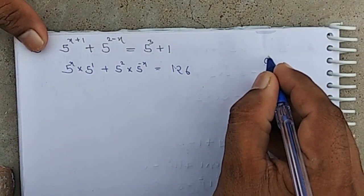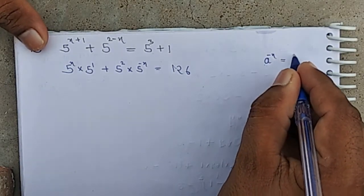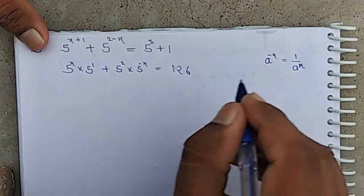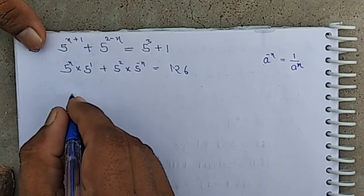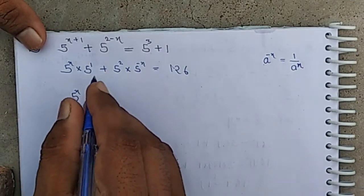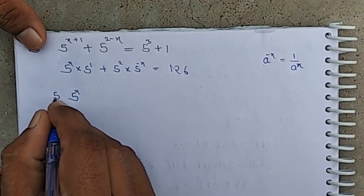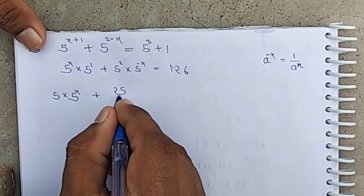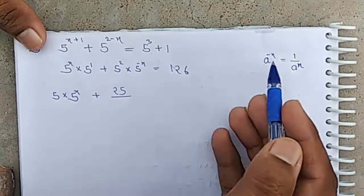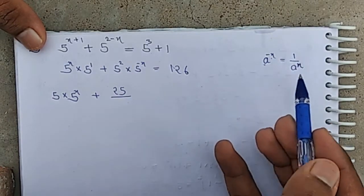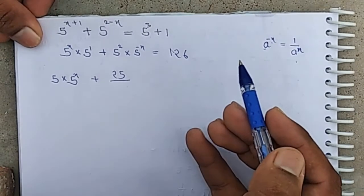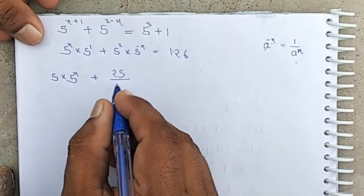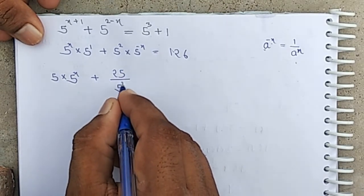Now we know that a to the power minus x equals 1 by a to the power x. So 5 to the power minus x can be written as 1 by 5 to the power x.